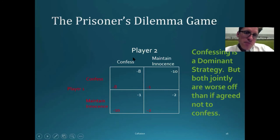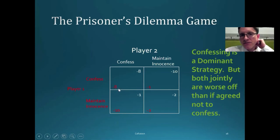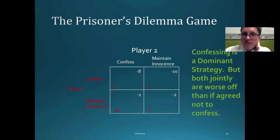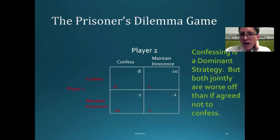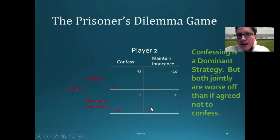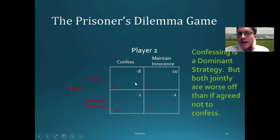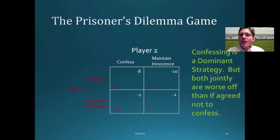If player two confesses, player one still has two possible strategies. If player one maintains innocence, they get 10 years in jail, whereas if they confess, they get eight years. So again, it's better to confess. Whether player two confesses or maintains innocence, player one gets less time in jail by confessing. The same holds for player two — no matter what player one does, player two is better off confessing. So the only Nash equilibrium is for each player to confess, which actually produces the worst overall joint payoff — the total jail time is highest in this Nash equilibrium. That's the basic idea: the dominant strategy results in the worst overall outcome.